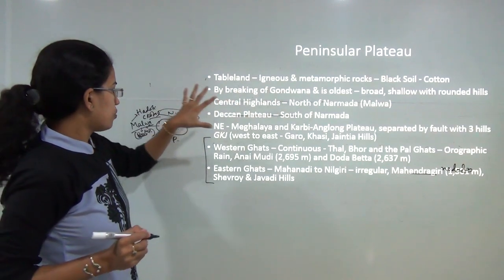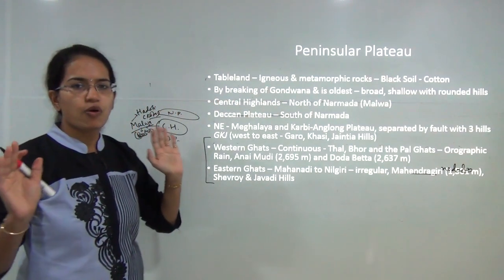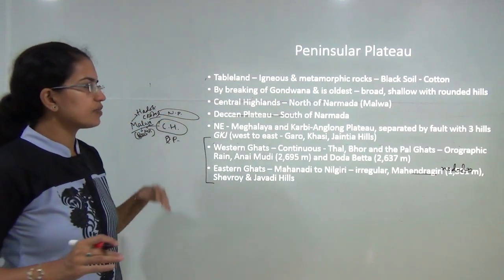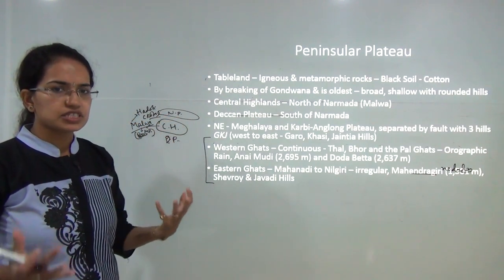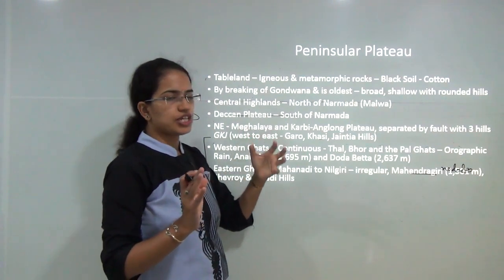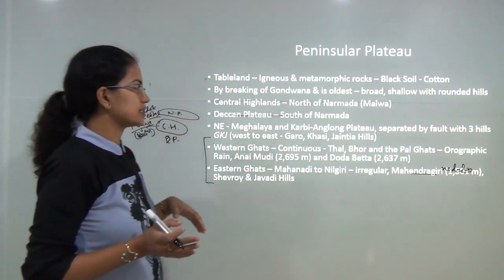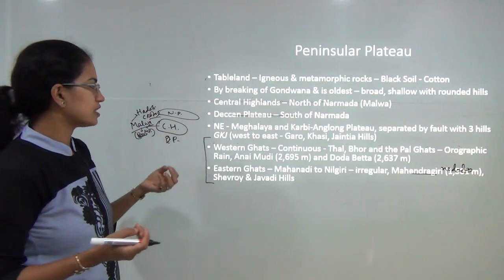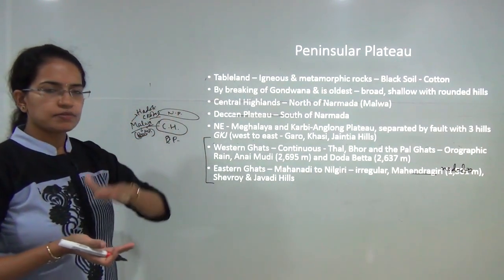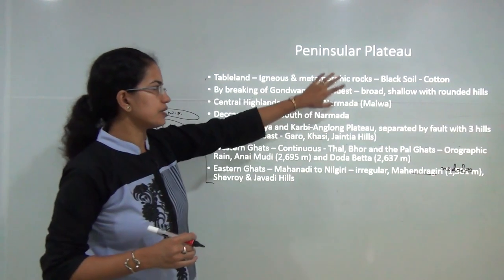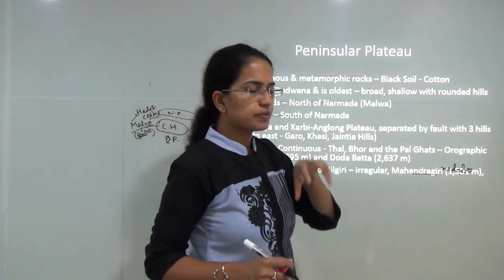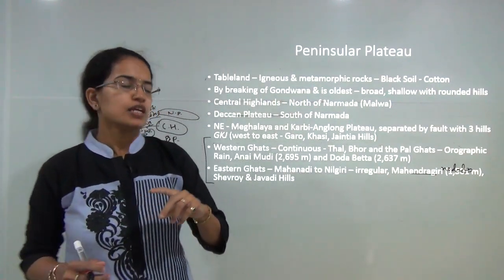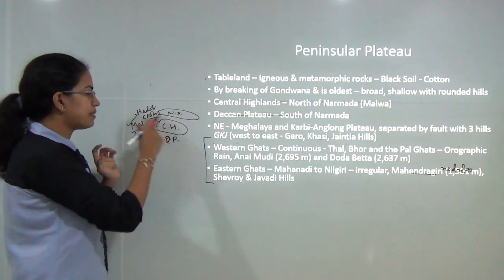This whole peninsular region was formed by the breaking up of Gondwana Land. It is assumed to be among the oldest land features in India. It is broad and shallow with small rounded hills. Most of the rocks here are igneous in origin, and under high pressure and temperature some have changed to metamorphic rocks. The soil is predominantly black soil, which is good for cotton cultivation.